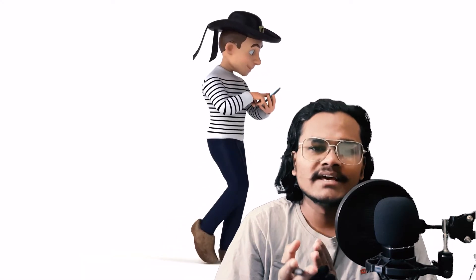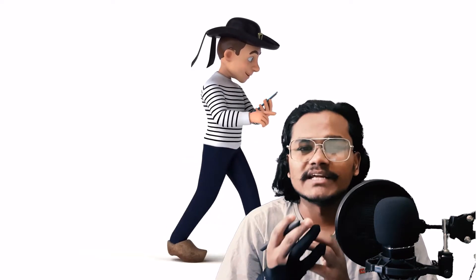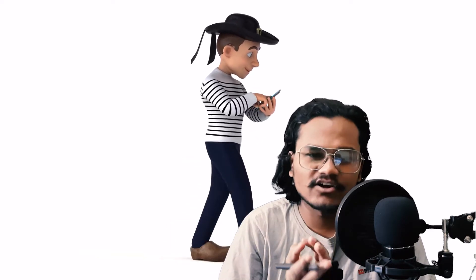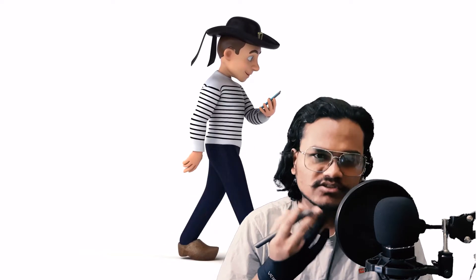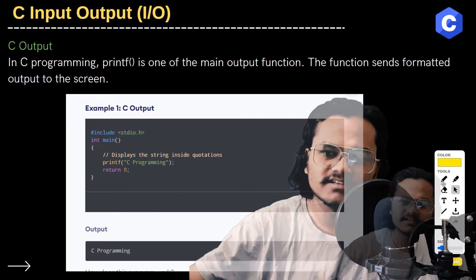In this video we are going to see about C programming language input and output. Input and output functions are used for user interaction in any programming language.